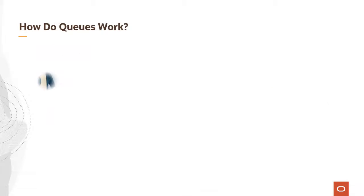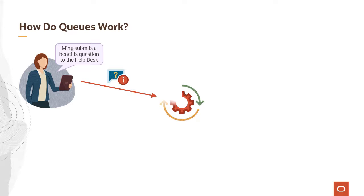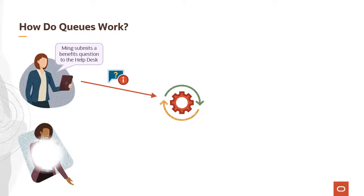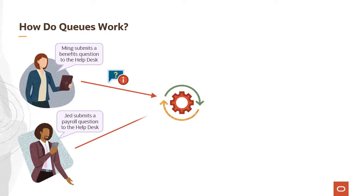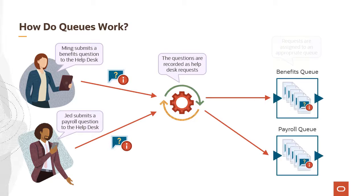In this example, Ming submits a benefits question to the help desk. Jed also submits a question asking about payroll. The question is recorded in a help desk request and then it's assigned to a queue, either manually or automatically.